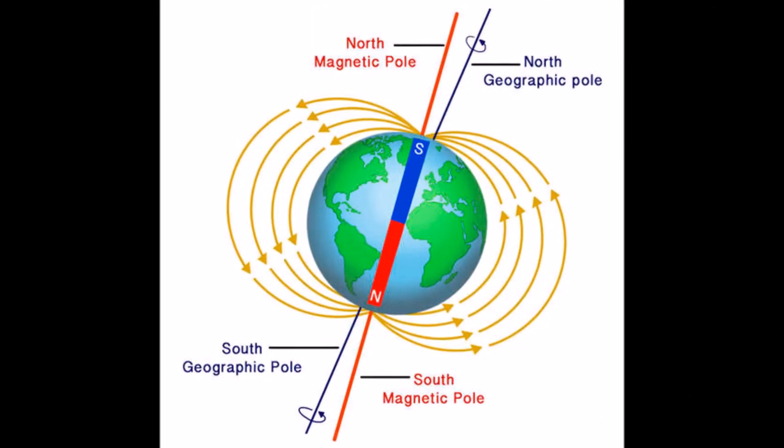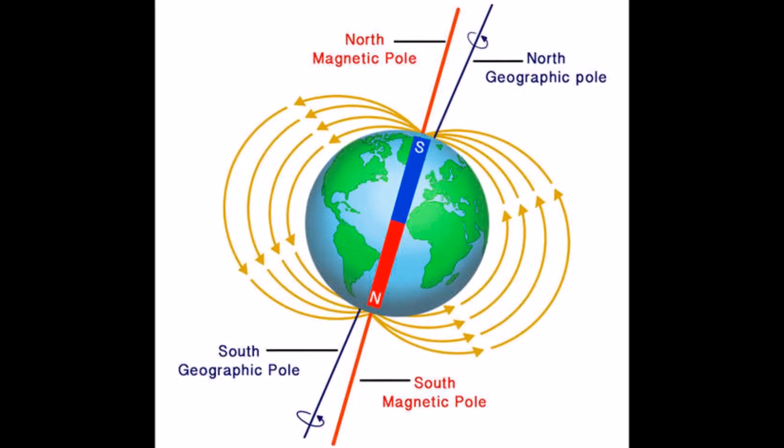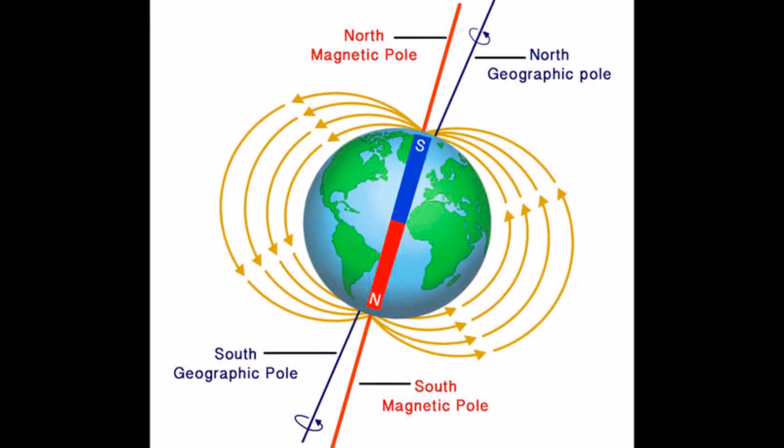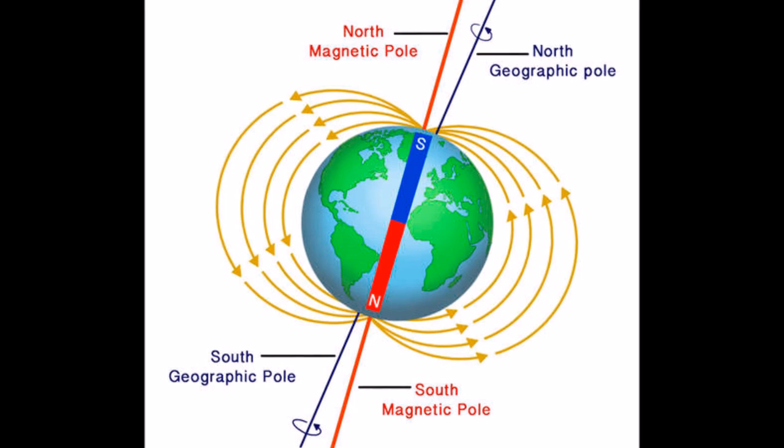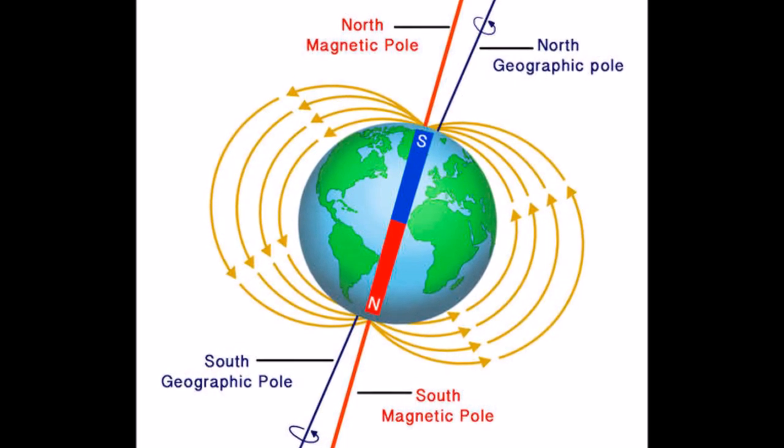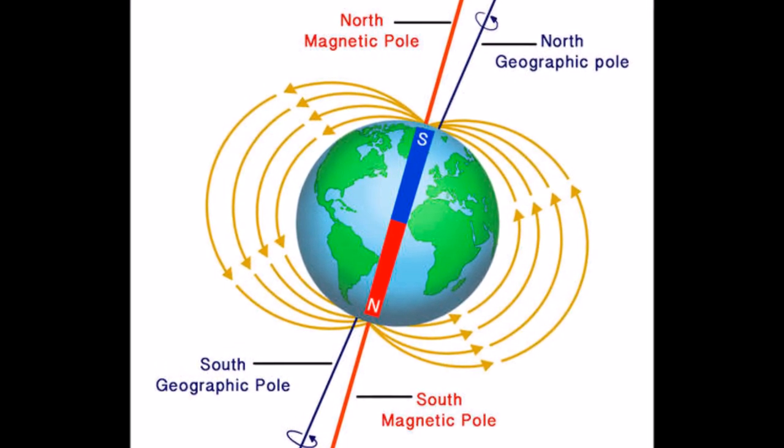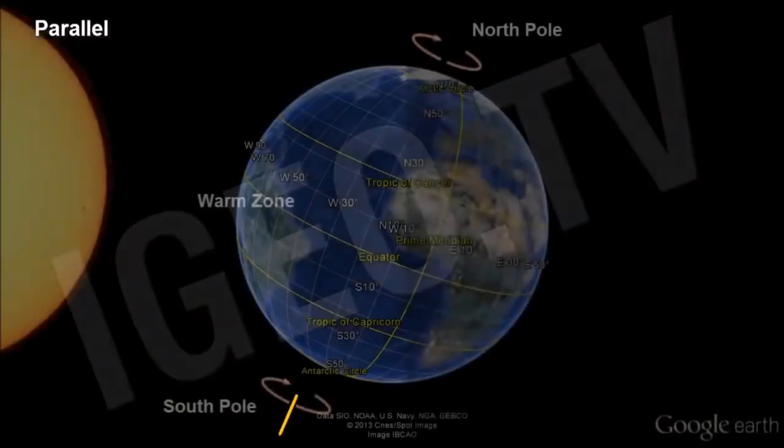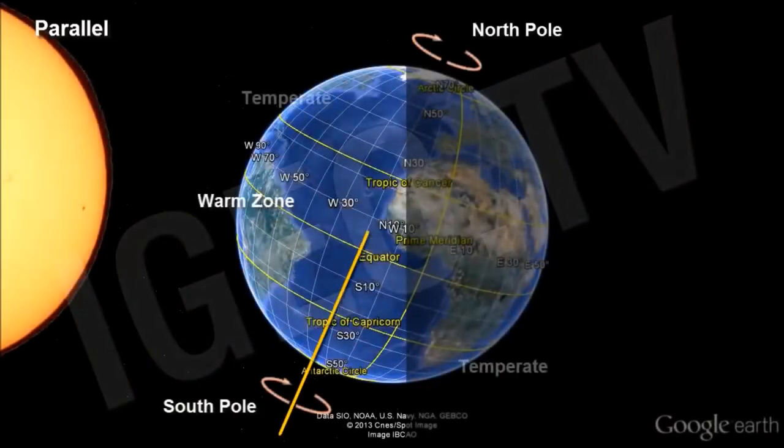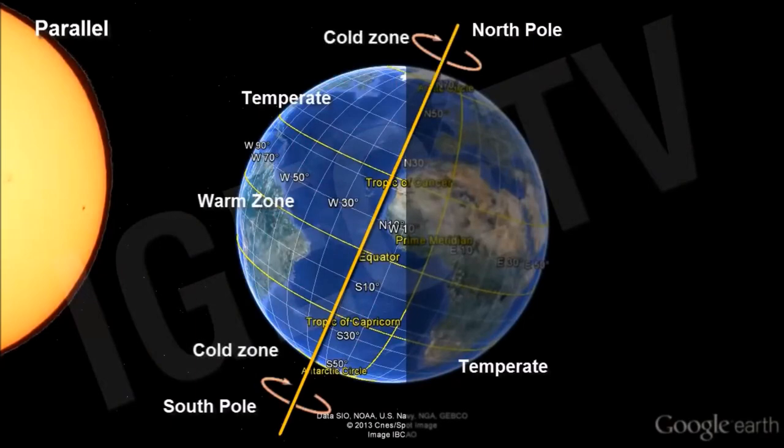The South Pole of the imaginary magnet inside the Earth is located near the geographic North Pole and the North Pole of the Earth magnet is located near the geographic South Pole. The line joining these magnetic poles is called the Magnetic Axis.